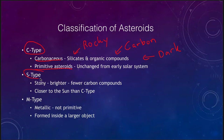We also see S-type asteroids. These are stony and they are brighter, so they're easier to see. They have fewer carbon compounds, so they're less sooty, they reflect more light, and they're a lot easier to see. When we look at distances, the S-type asteroids are closer to the Sun, while the C-type carbonaceous ones are further away.